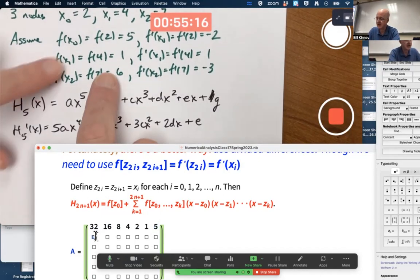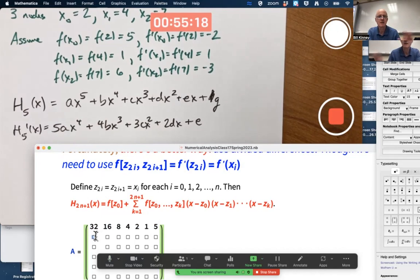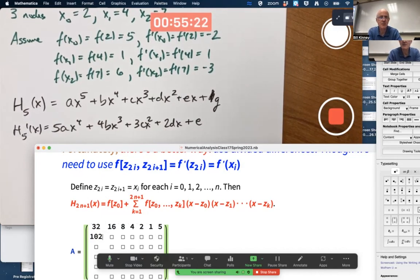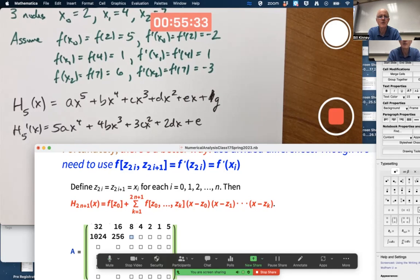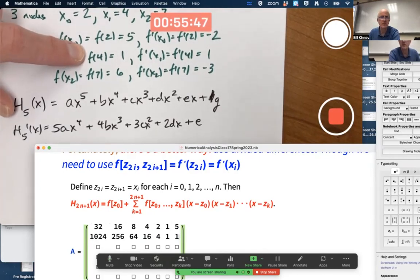Now I'll go to this one, F of four equals one. Four to the fifth is the same as two to the tenth, 1024. Then I got four to the fourth, which will be 256. Four cubed, 64. Four squared, 16, four to the first, one. That last one is because I want F of four to equal one.